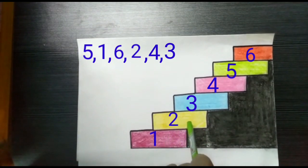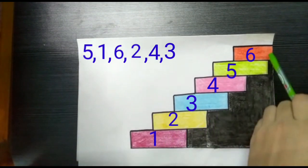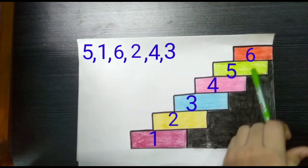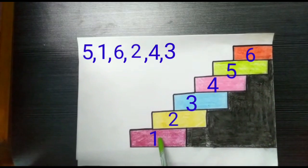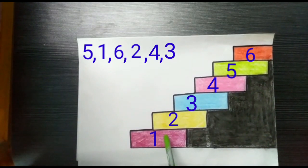Very good. The numbers in descending order are 6, 5, 4, 3, 2, 1. Always remember, in descending order, each number is smaller than the previous number.